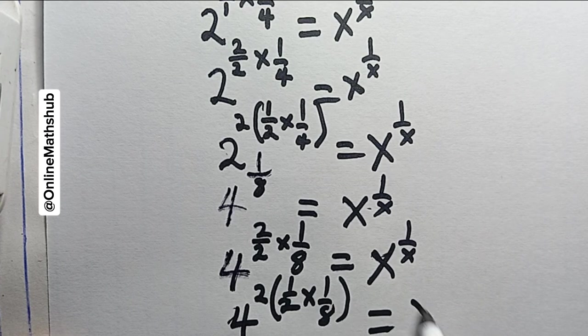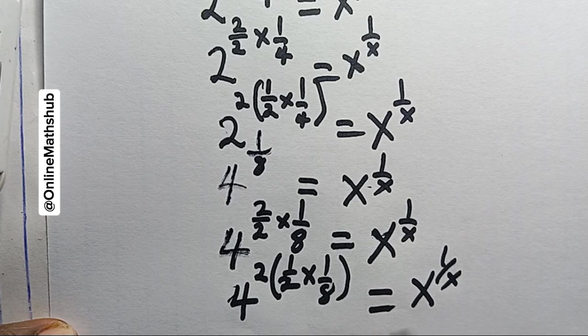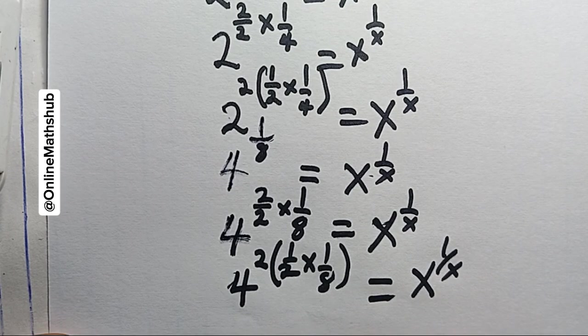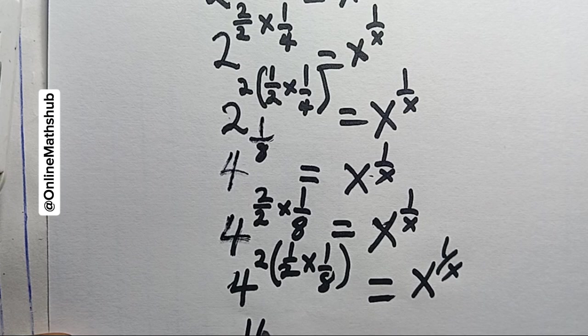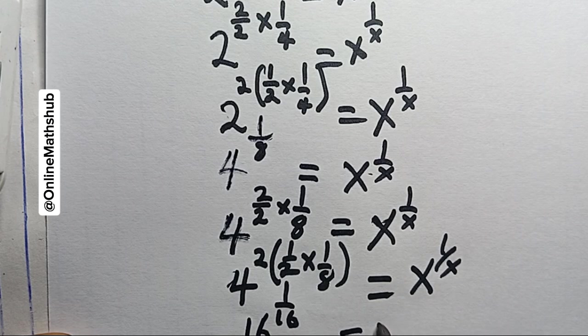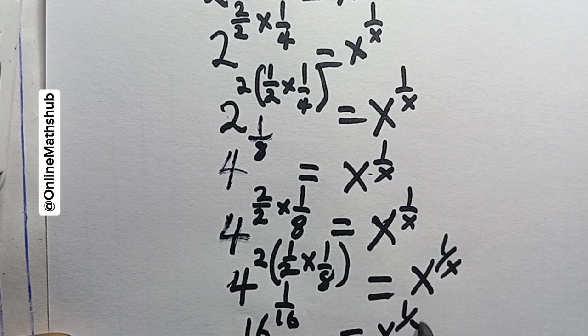4^2 here is 16, power 1 over 2 times 8 here is 16, and this will equal x^(1/x). You can see that we've got both sides of the equation to be in the same pattern.